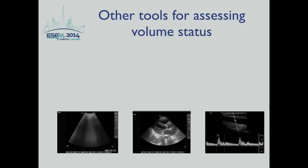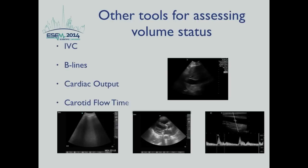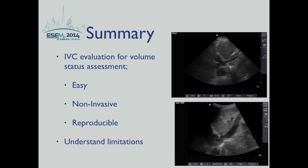There are multiple other sonographic findings that can be used to assess volume status. In this presentation, we discussed the use of IVC. Other sonographic findings including B-lines, cardiac output, and carotid flow times are interesting modalities but beyond the scope of this presentation. In summary, IVC evaluation for volume status assessment is easy, non-invasive, reproducible, and fast. Small collapsible IVC — give fluids. Plethoric IVC may still need fluid. Therefore, assess your patient, use other tools, and use your clinical judgment.